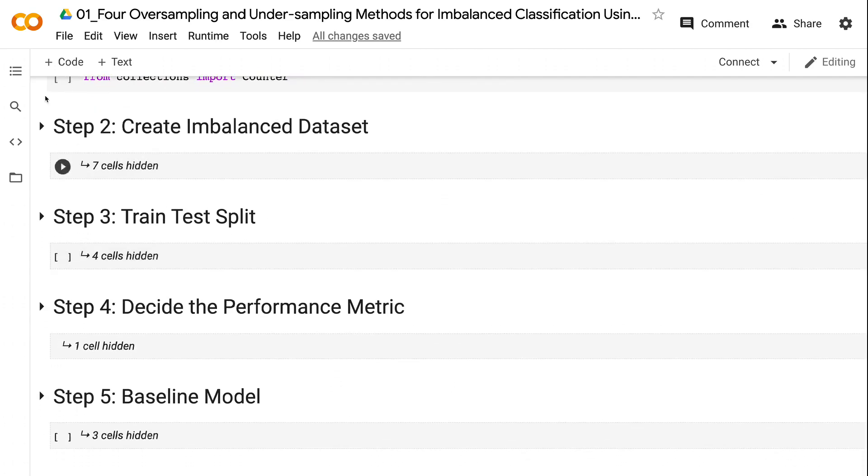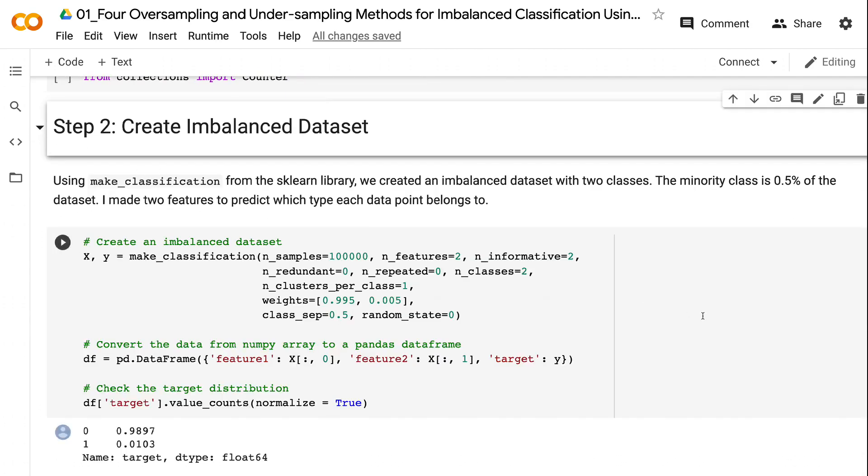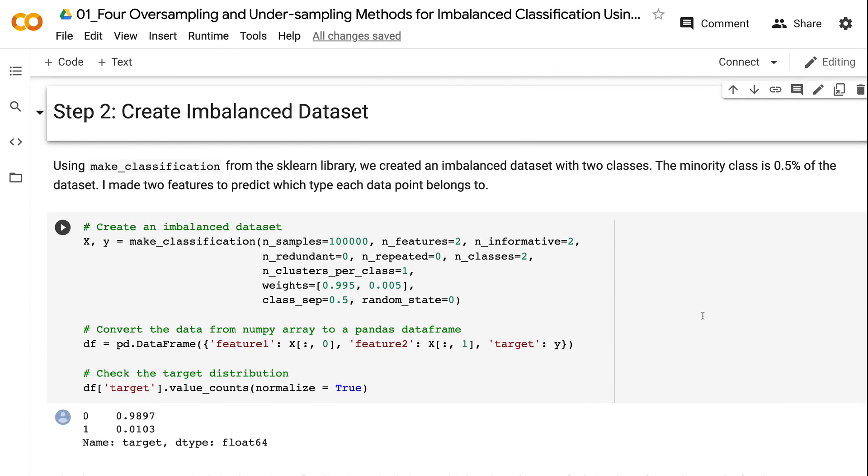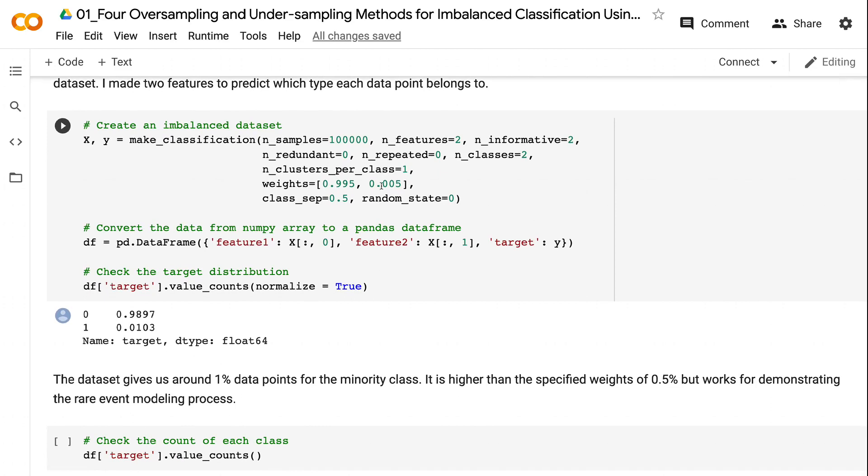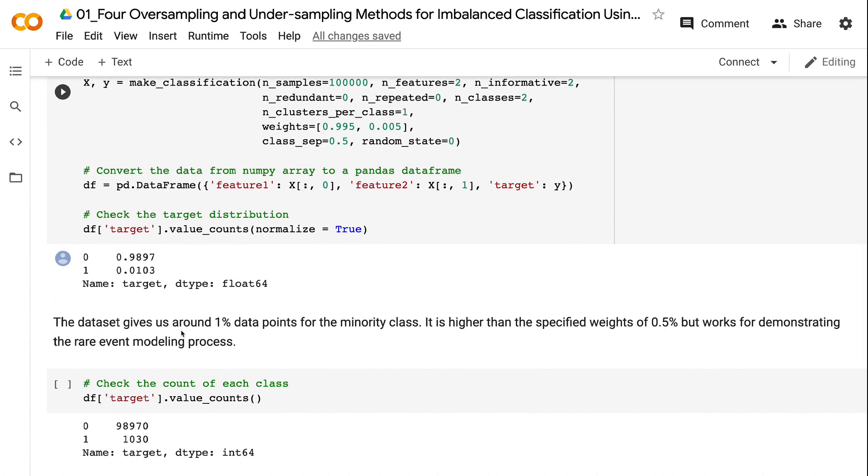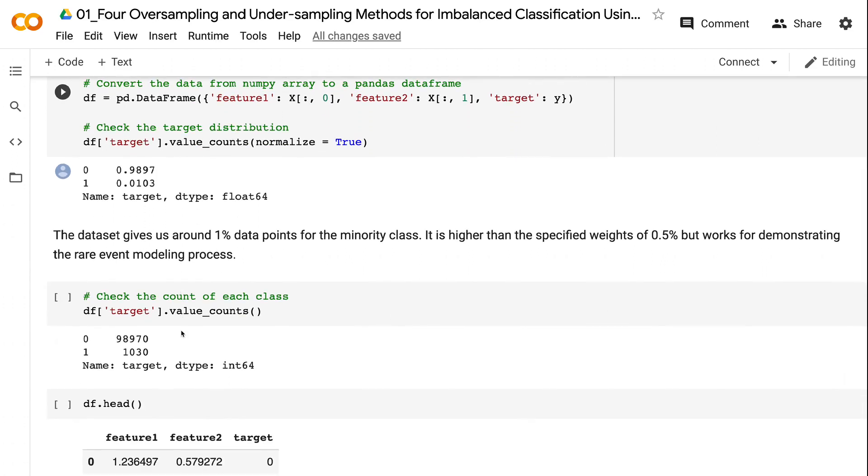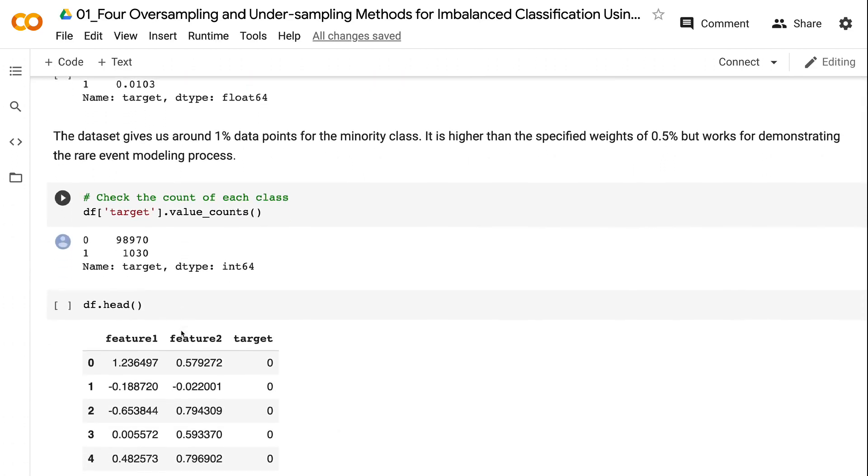Using make_classification from the sklearn library, we create an imbalanced dataset with two classes. The minority class is 0.5% of the dataset. I made two features to predict which type each data point belongs to. The dataset gives us around 1% data points for the minority class. It is higher than the specified weights of 0.5%, but works for demonstrating the rare event modeling process.